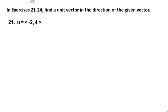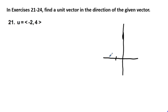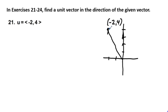Let's go ahead and make a little sketch of this vector. We have vector u equals negative 2 comma 4. Drawing the xy coordinate plane, we go to negative 2 comma 4 — about right here. That's our vector, drawn in coordinate pair notation, vector u in brackets: negative 2 comma 4.